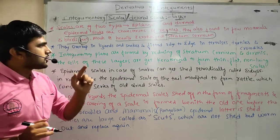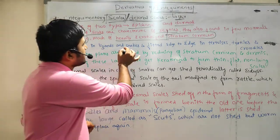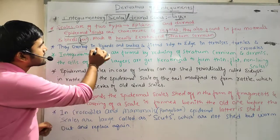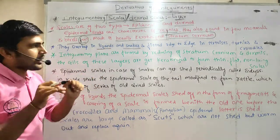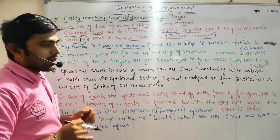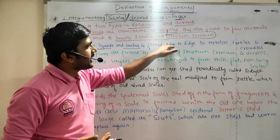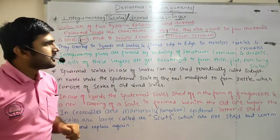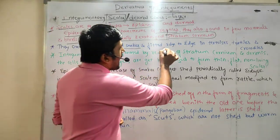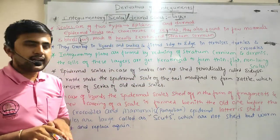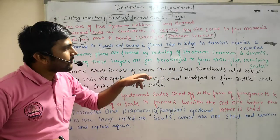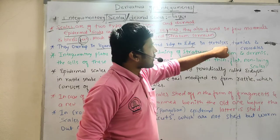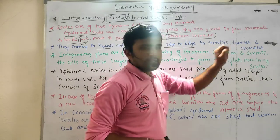The scales can overlap on each other — in the case of snakes and lizards they can overlap. They can also be fitted edge to edge, meaning side by side. Edge to edge means side by side, as in the case of turtles and crocodiles.